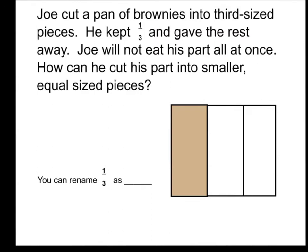Let's take a look at our first example. The question says Joe cut a pan of brownies into third size equal pieces. He kept one third and gave the rest away. Joe will not eat his part all at once. How can he cut his part into smaller equal size pieces?